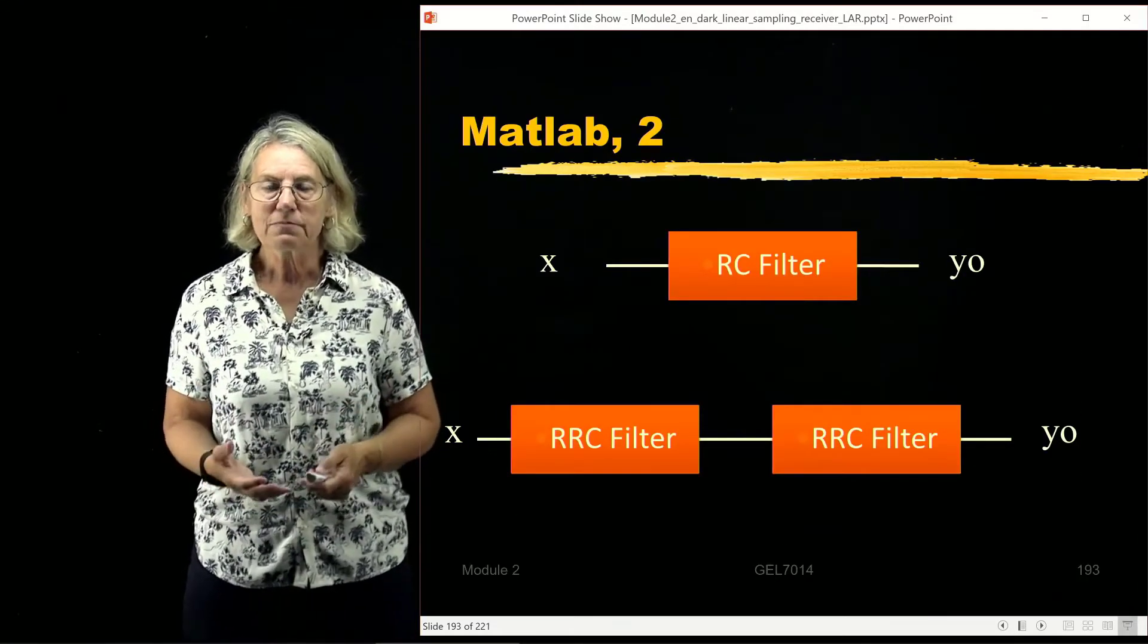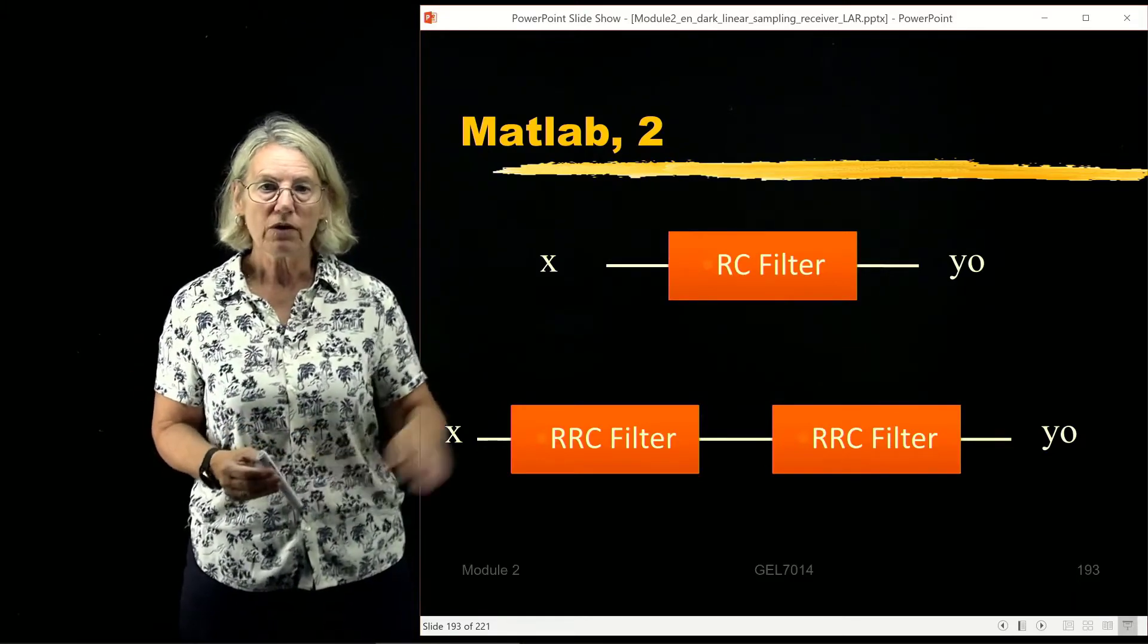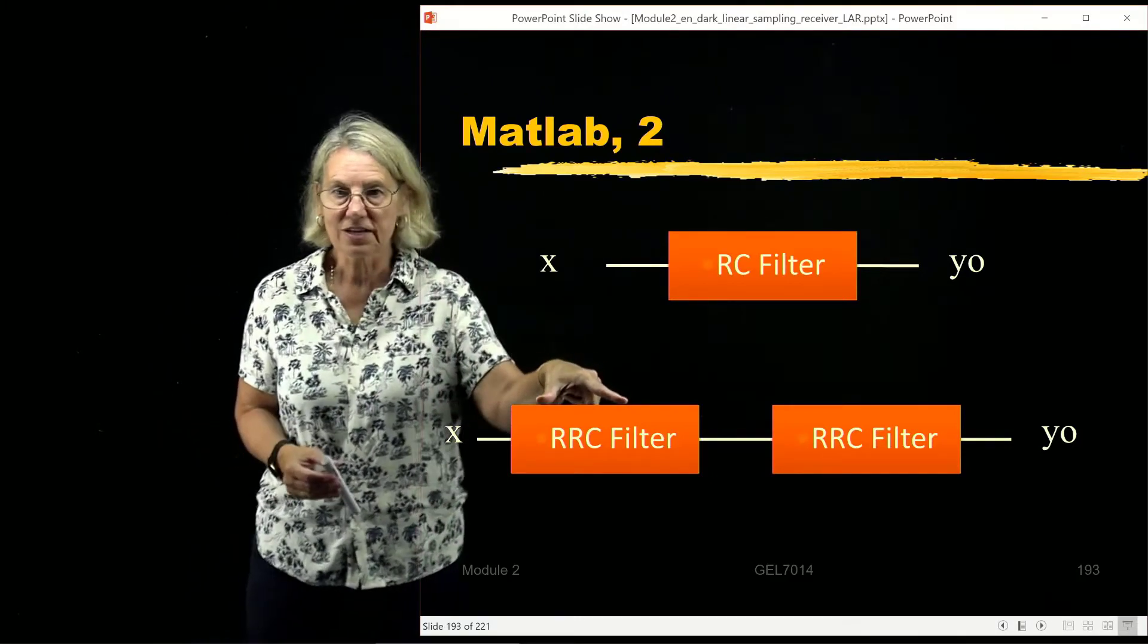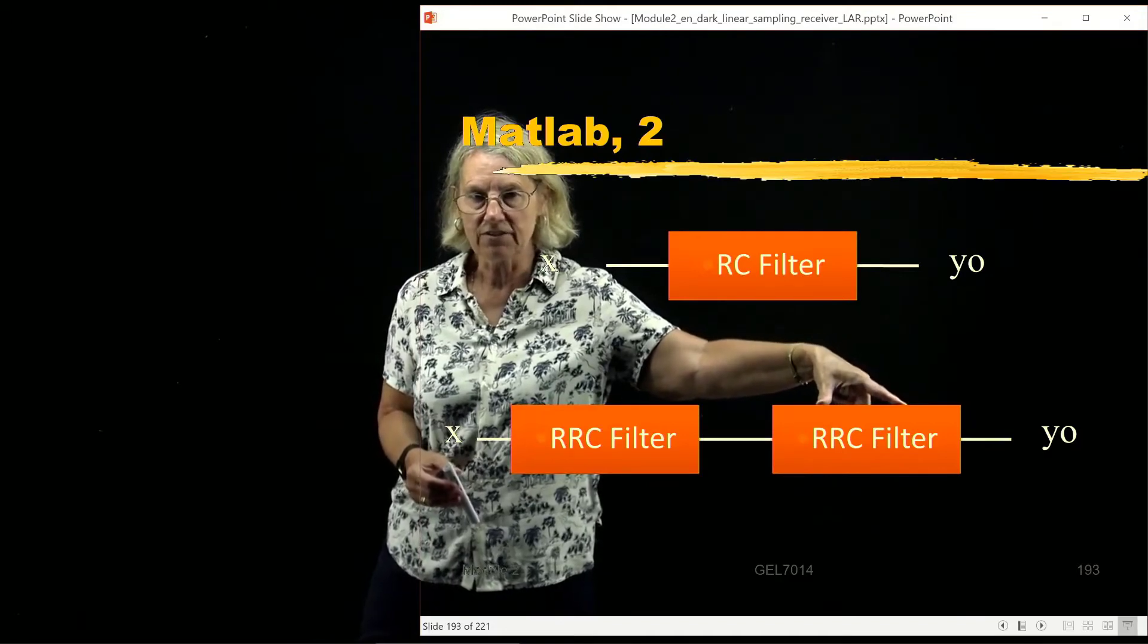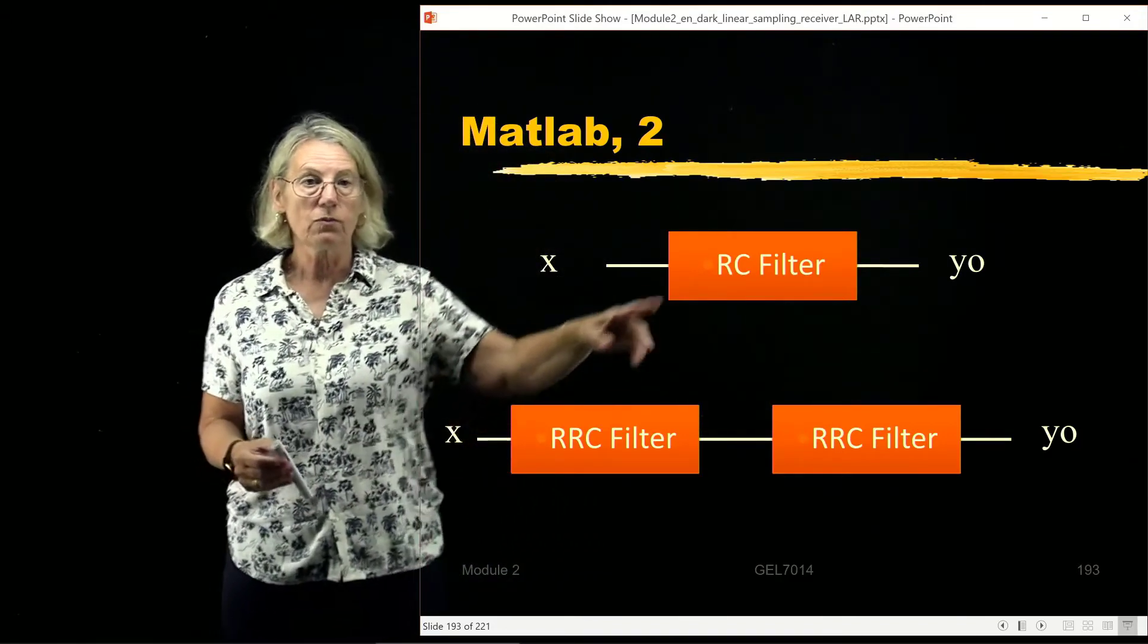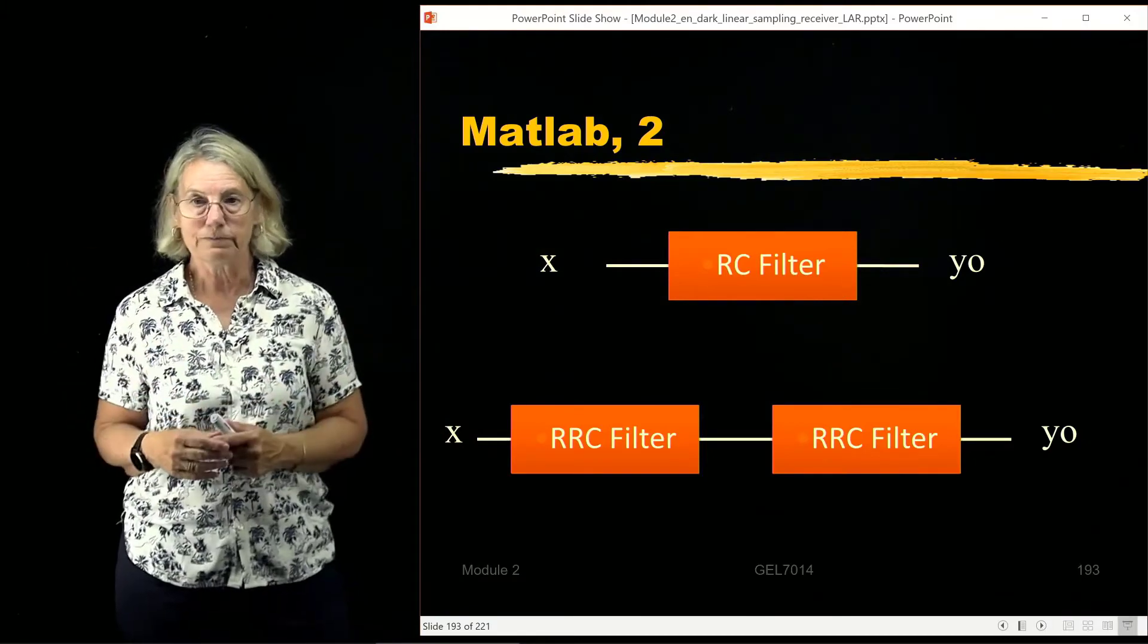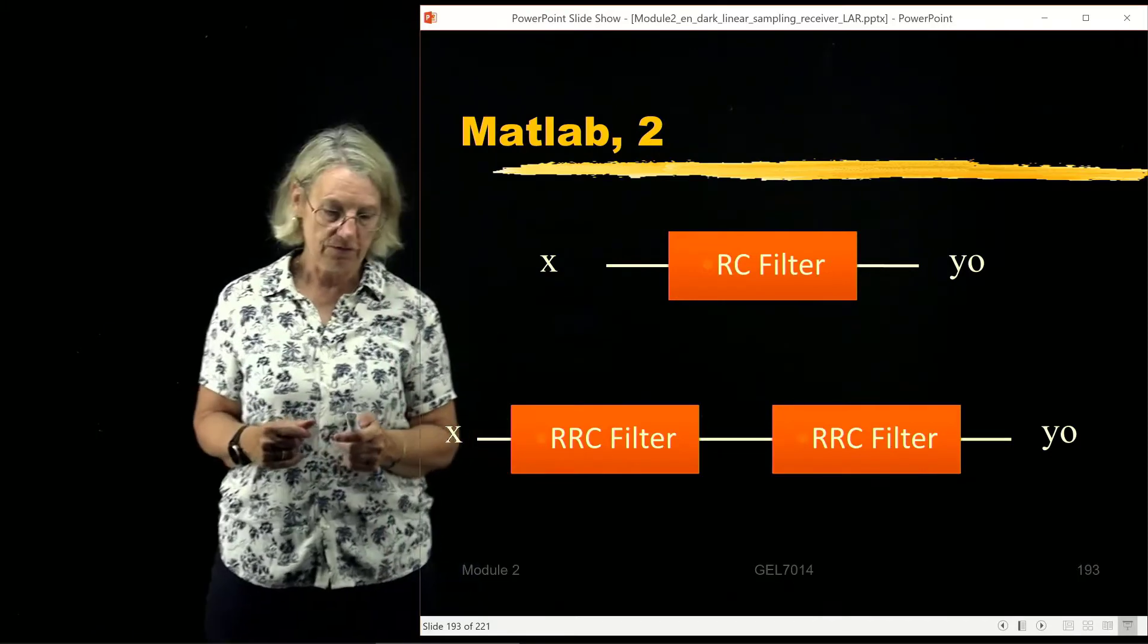So you might be tempted to look at two equivalent implementations in MATLAB, one which is separating the filter into the transmit side raised cosine, root raised cosine filter, and the receiver side root raised cosine filter, or an equivalent one where you have a simple raised cosine filter which represents the two. That's fine in terms of the filter response, but you have to be careful in your treatment of noise.